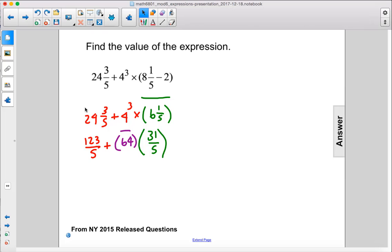So now we have, and I also have changed this into an improper fraction, so now everything is over 5. So this is 123 divided by 5. This is 64 times 31 divided by 5.